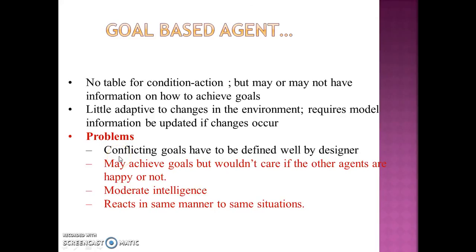The problems with this agent architecture are: many times multiple goals are given and the goals are conflicting. In that case, the designer has to take care of setting preference levels for conflicting goals; otherwise, the performance of the agent would not be as expected. The agent architecture may achieve goals but would not care if other agents are happy or not — this is by design, not a flaw. If it did care about other agents' happiness, it would be a utility-based agent. These architectures have moderate intelligence and if the same situation occurs again and again, they react in the same manner without any change in behavior.